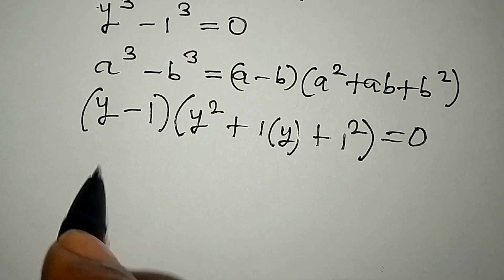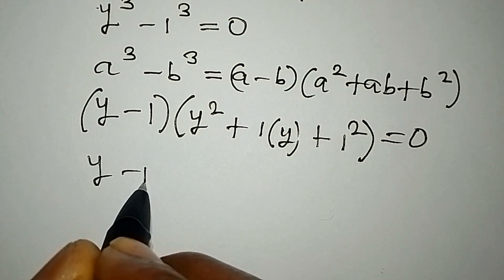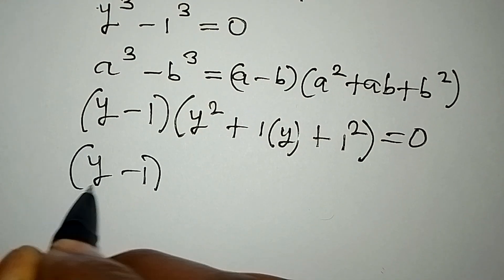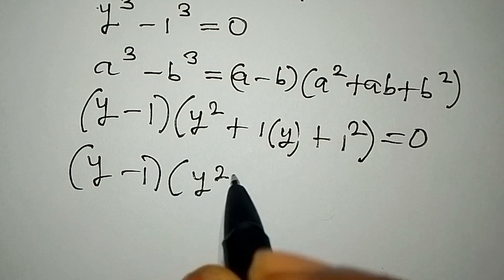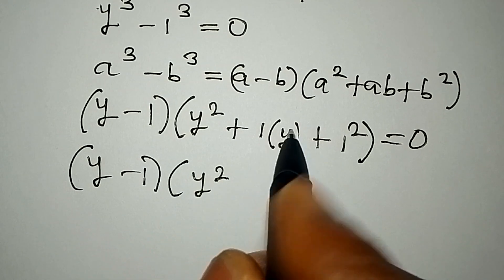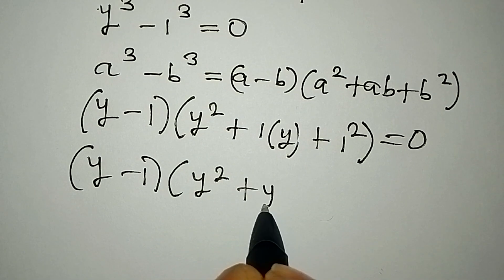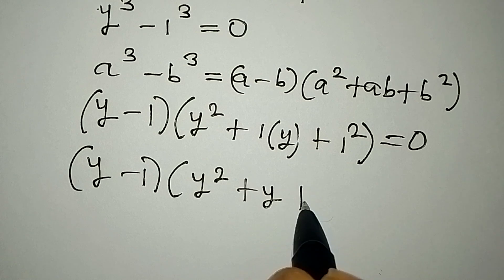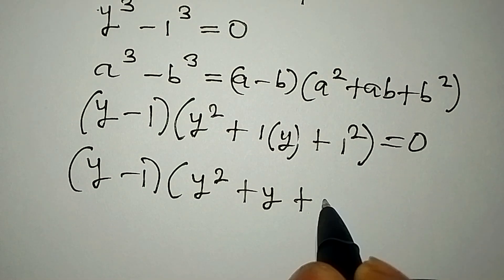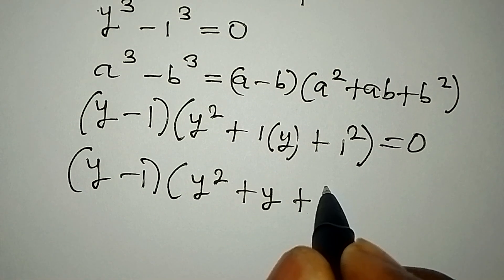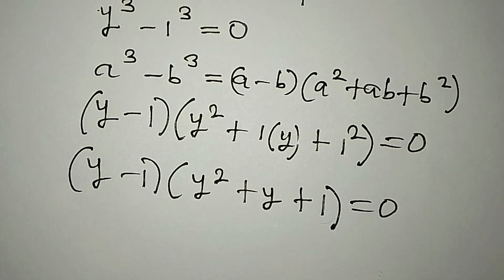To continue, we have y minus 1, times y squared. Then 1 times y gives us y, plus 1 squared gives 1. And this is equal to 0.